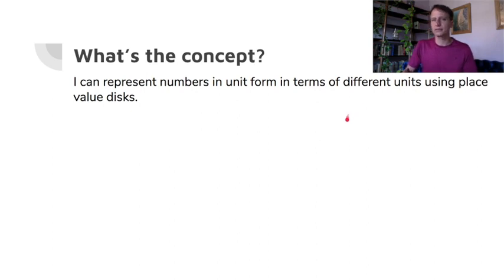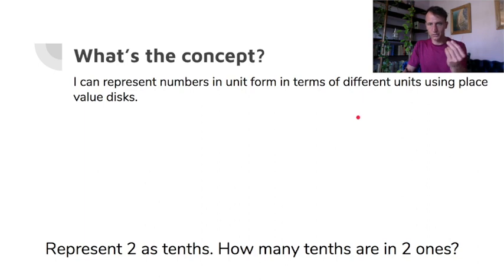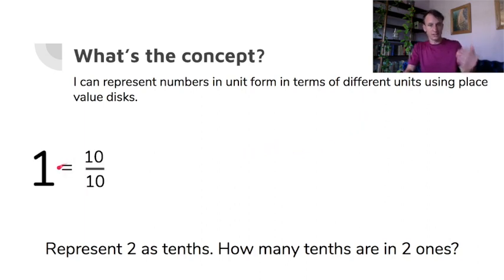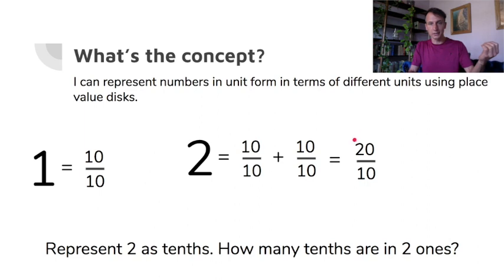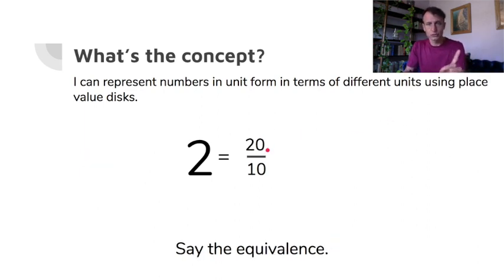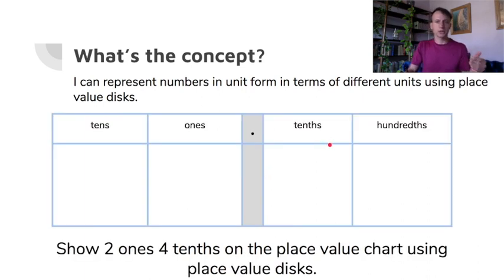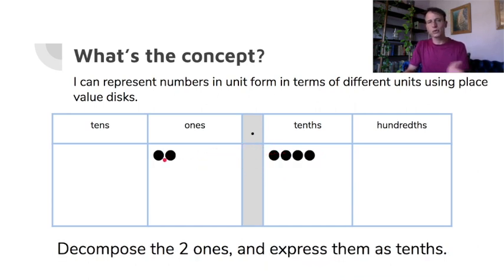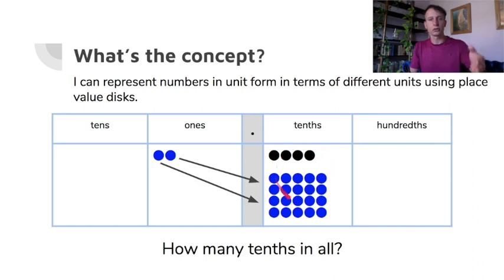Now we're going to do something similar but using place value disks. Let's represent the whole number two as tenths. How many tenths are in two ones? One whole is ten tenths, so two wholes is twenty tenths — ten tenths and ten tenths. Now on a place value chart: two ones and four tenths. If we decompose those two ones as tenths — cashing in your dollar bills for dimes — that's ten dimes and ten dimes, twenty dimes over here. How many tenths total? 24 tenths.